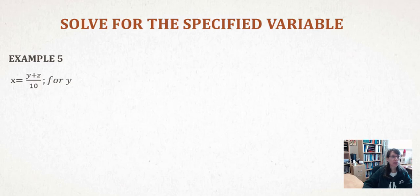In example 5, we are given X equals Y plus C divided by 10. We are trying to solve this equation now for the variable Y. Since Y is in the numerator of a fraction, we are going to have to clear the fraction from the equation in order to isolate the variable Y. 10 is our only denominator, so the lowest common denominator must be 10. To eliminate the fraction, we simply multiply each side of the equation by 10.